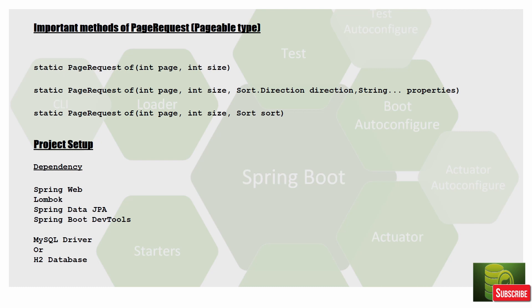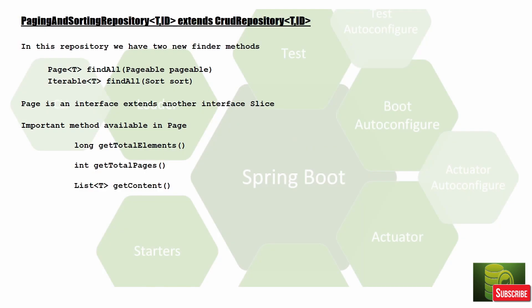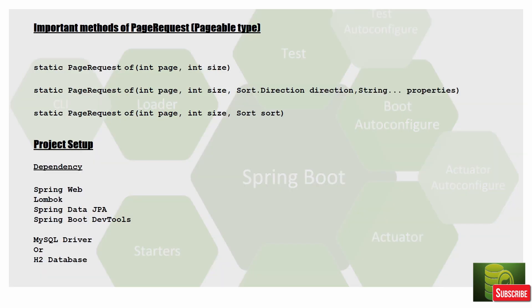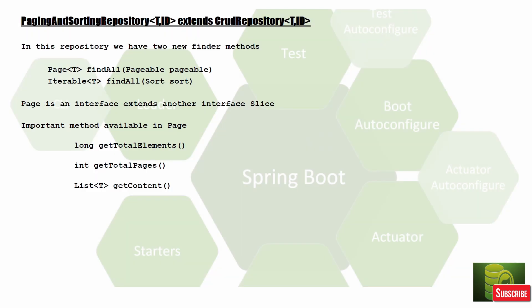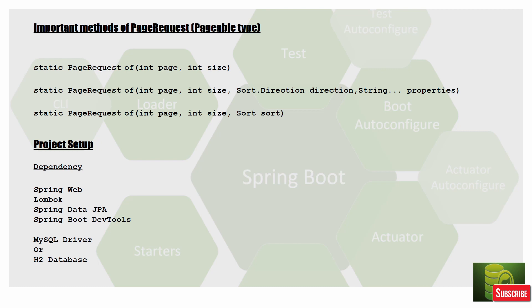Important methods of PageRequest: PageRequest is a Pageable type. Pageable is an interface implemented by PageRequest. You call static methods on PageRequest and it returns a PageRequest, which is of Pageable type, and that's what you pass to findAll. We'll get a better idea when we do the programming. I'll also put the PowerPoint in the description for future reference.